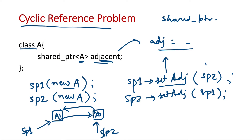If we replace the shared pointer inside the class with a weak pointer, this cyclic dependency will not happen. The link becomes a weak reference — represented by a dotted line — breaking the cycle. There will be no cycle and no memory leak. Let's see all of these concepts in running code in Xcode.